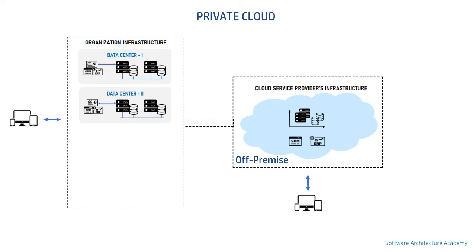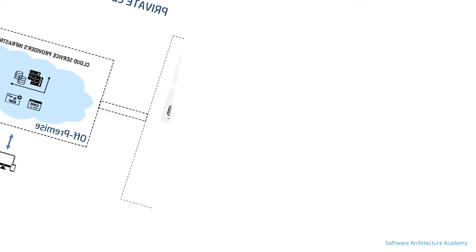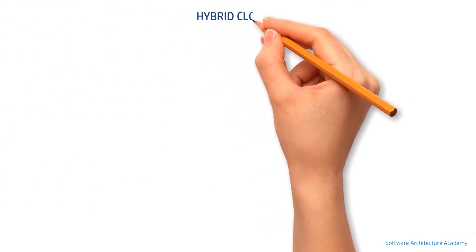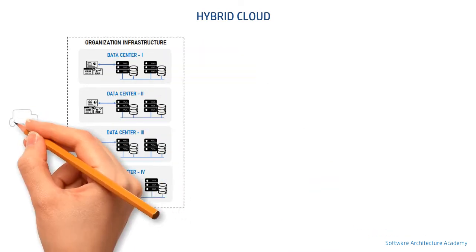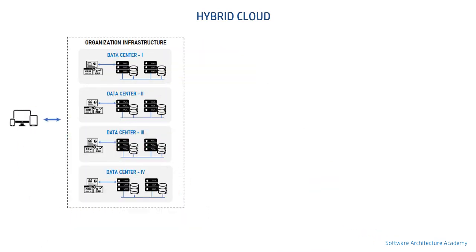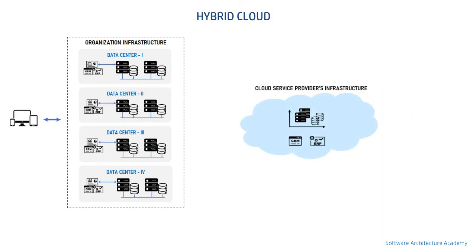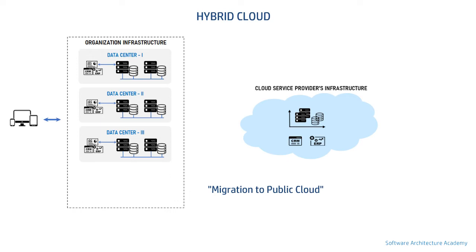Private cloud did solve the problem of data security and compliance, but it didn't fully utilize the benefits that cloud provides. Hence came hybrid cloud, which is now the most popular model amongst large organizations and is the way forward. Simply put, a hybrid cloud is a combination of at least one public cloud and at least one private cloud.